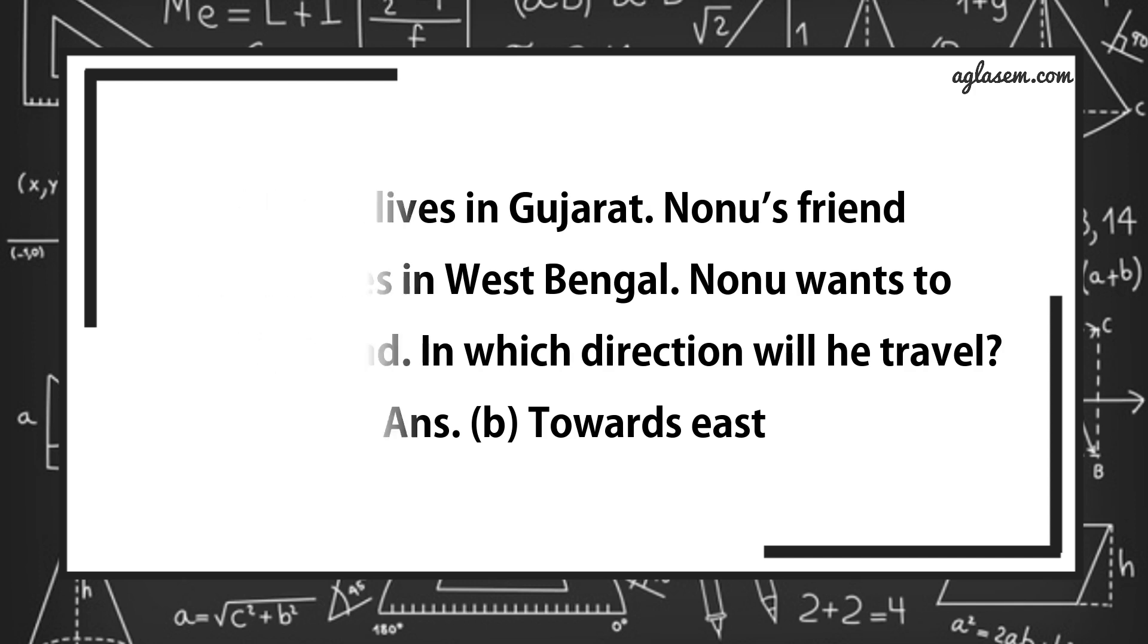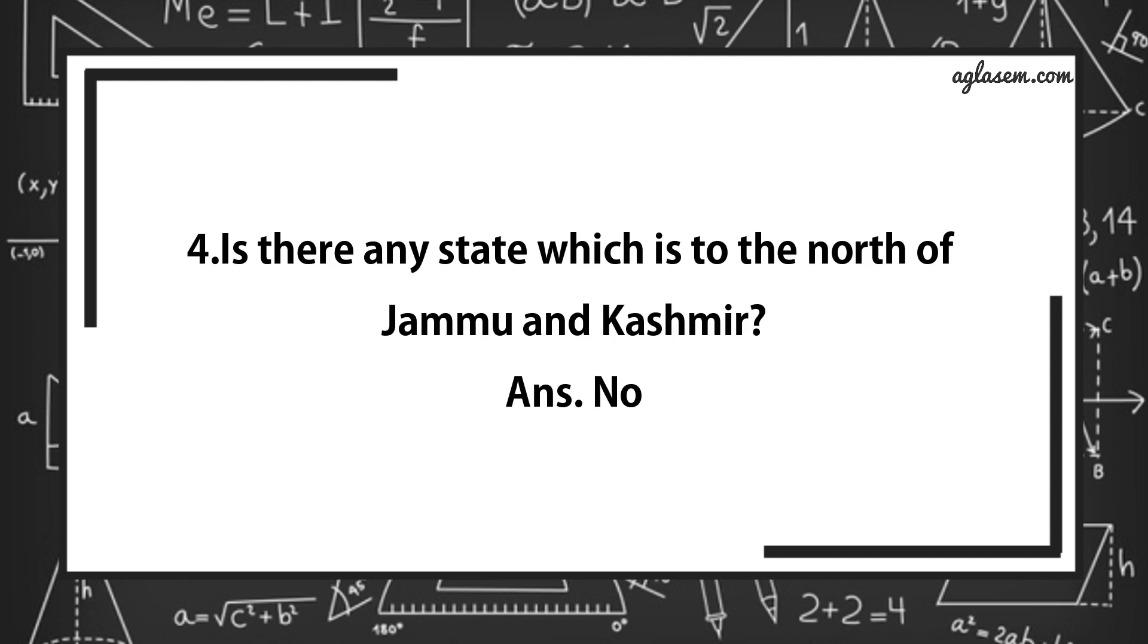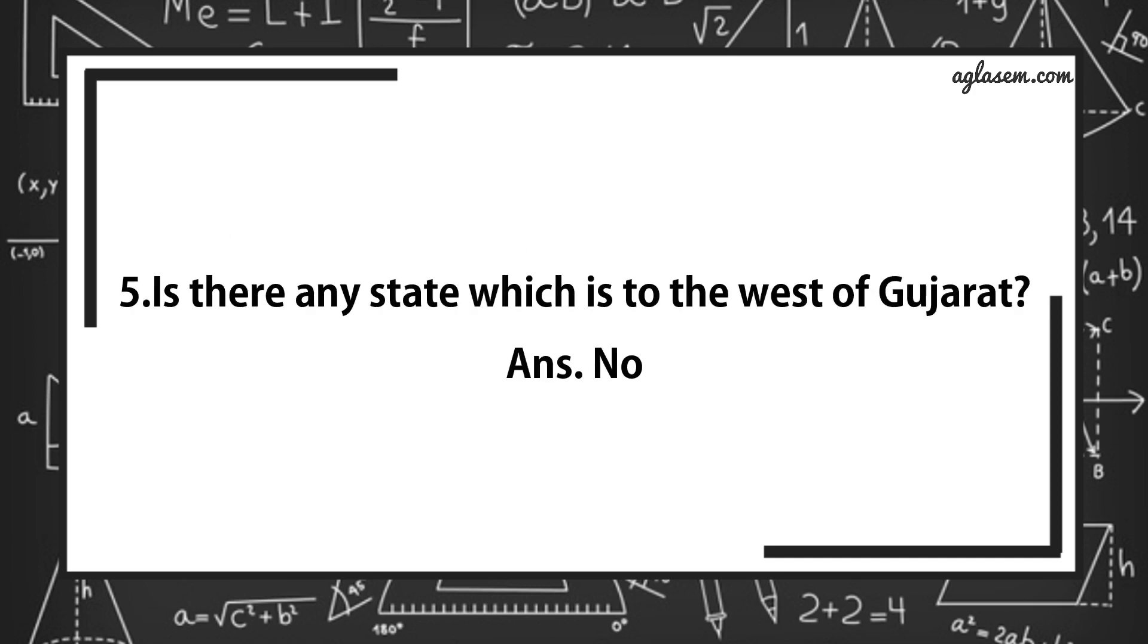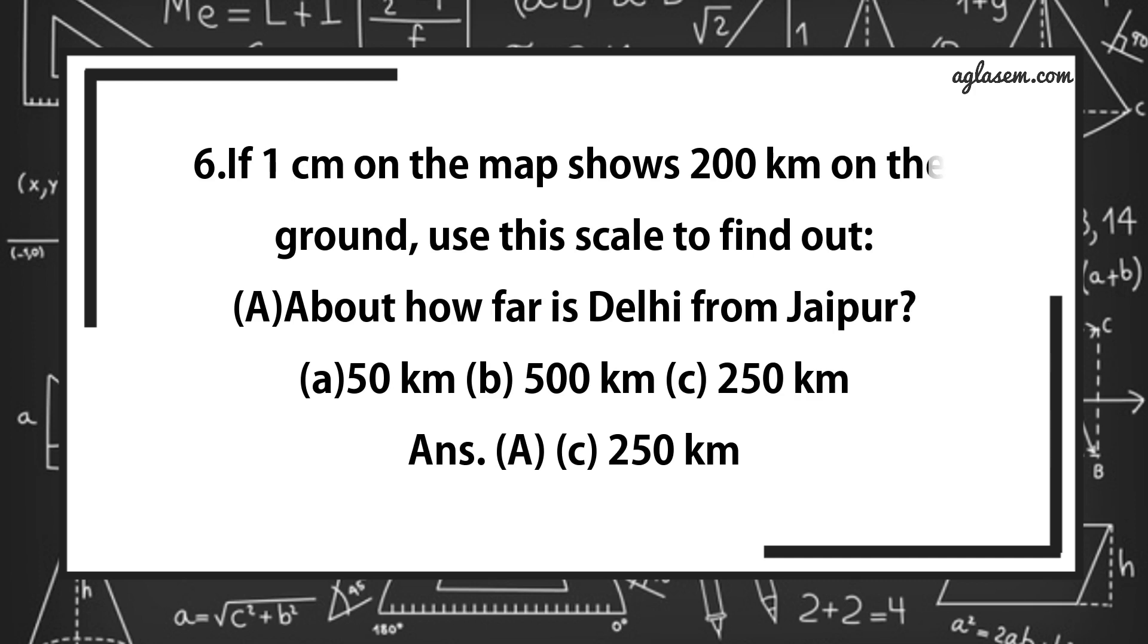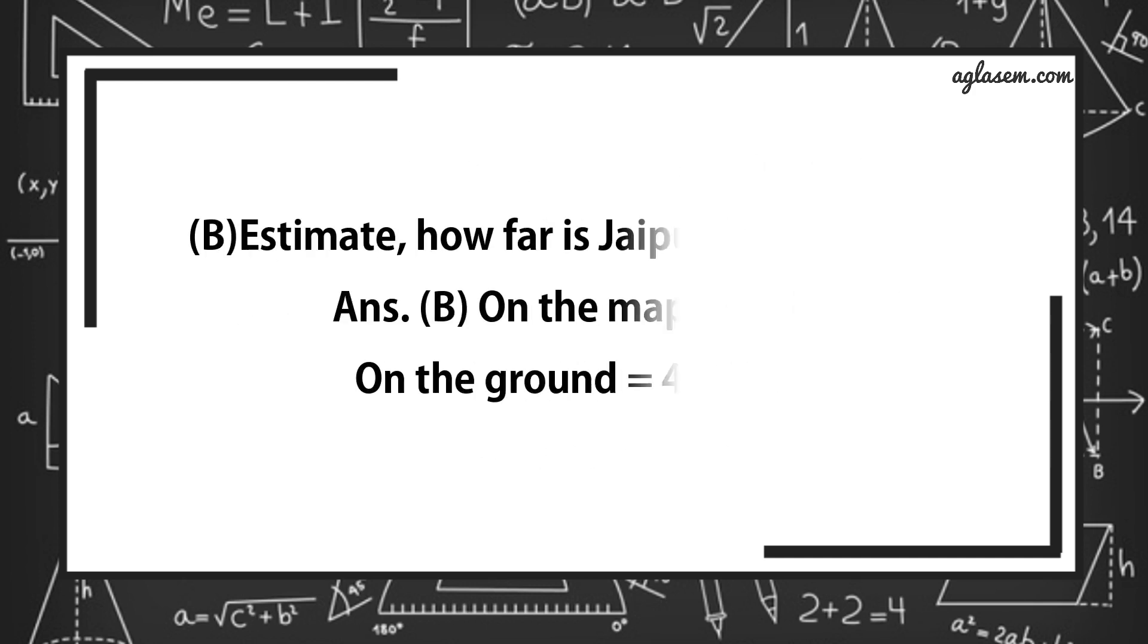For question number 4 says, is there any state which is to north of Jammu and Kashmir? Answer is, no. Fifth question says, is there any state which is to the west of Gujarat? Answer is, no. For the sixth question says, if 1 cm of the map shows 200 km on the ground, use the scale to find out. First part says, about how far is Delhi from Jaipur? Answer is C, that is 250 km. Further, B part says, estimate how far is Jaipur from Bhopal? Answer is, on the map 2 cm, which on the ground is equal to 400 km.